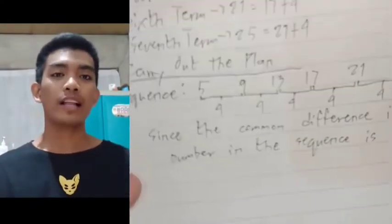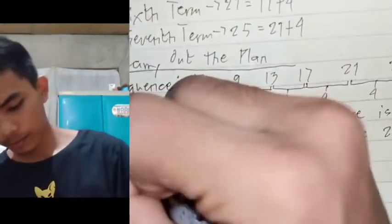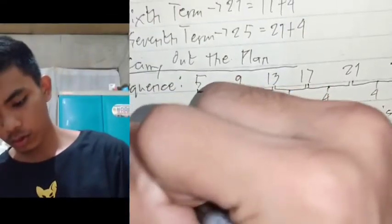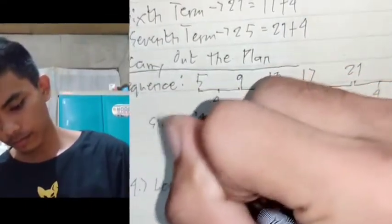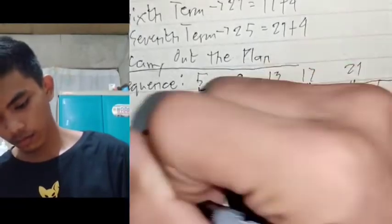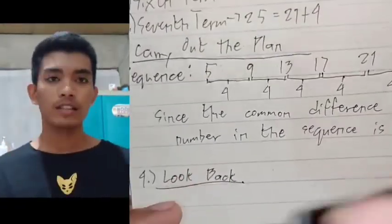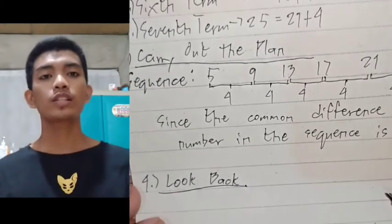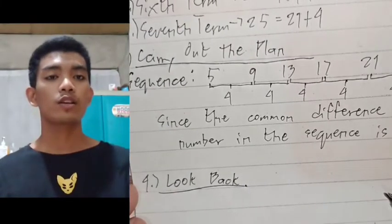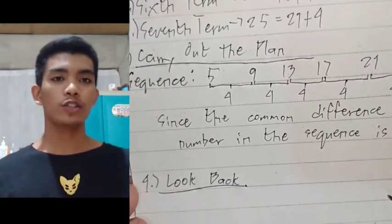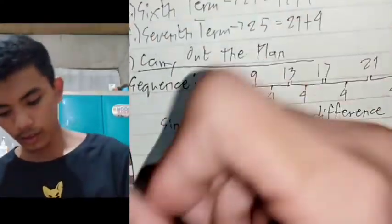And now we will have to go to the last step, which is to look back. In this step, we would just have to write the sequence with the missing information along with it.